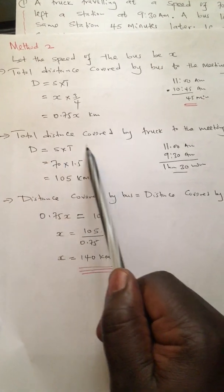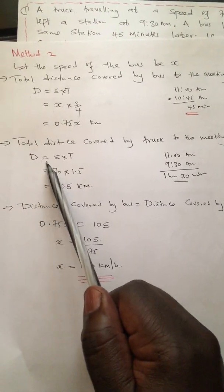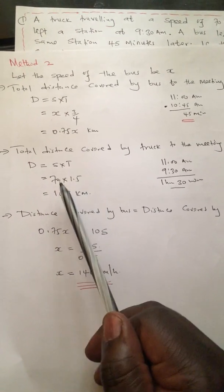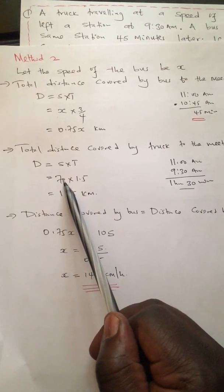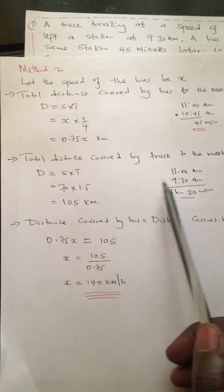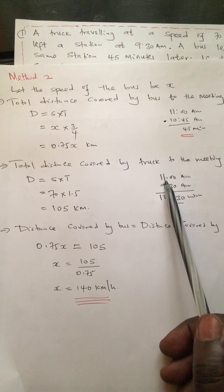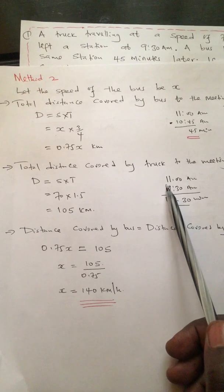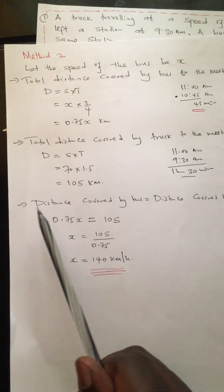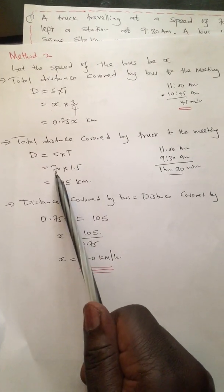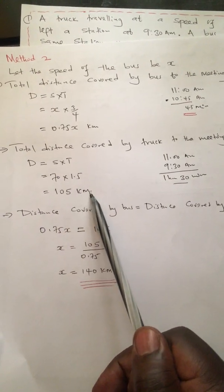Next, the total distance covered by the truck to the meeting point. Distance equals speed times time. The speed of the truck was 70 km/h. It left the station at 9:30 and was overtaken at 11, so the time taken is 1 hour 30 minutes. So: 70 times 1.5 equals 105 kilometers.